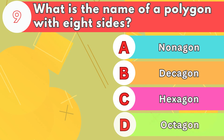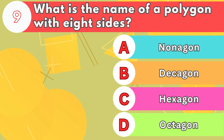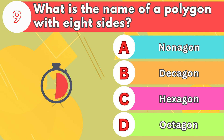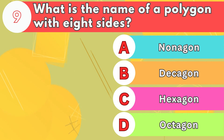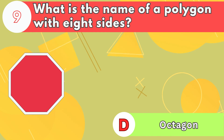Number 9. What is the name of a polygon with eight sides? The answer is letter D, octagon.